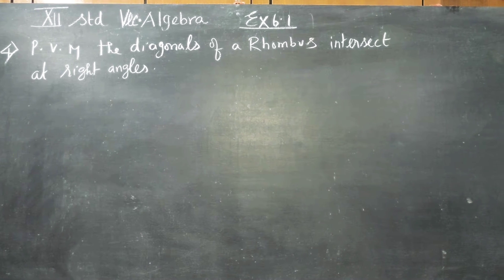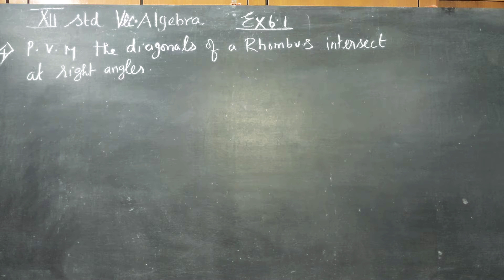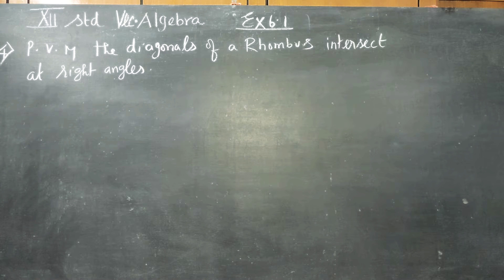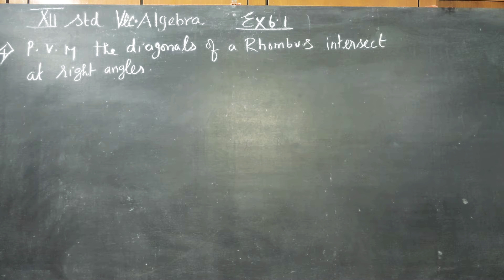Dear 12 standard students, in chapter number 6, Applications of Vector Algebra, first exercise 6.1, prove by vector methods: diagonals of a rhombus intersect at right angles.